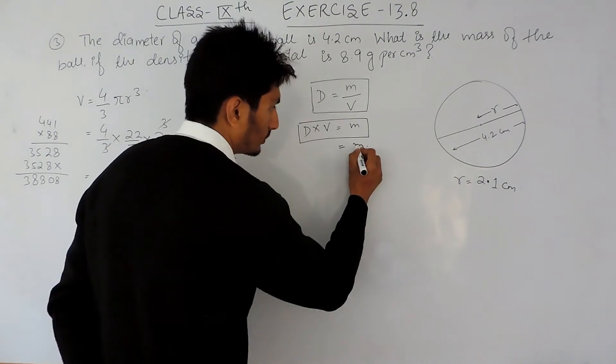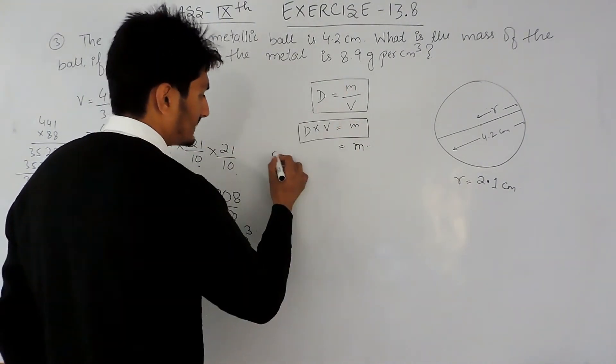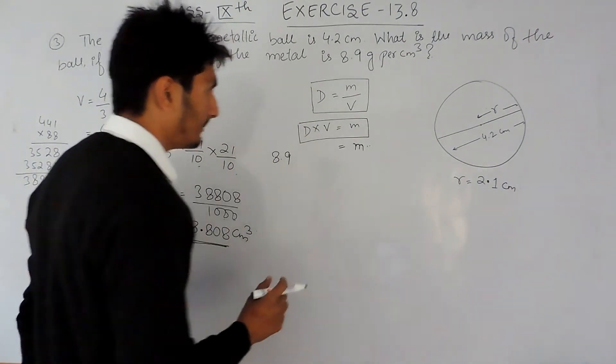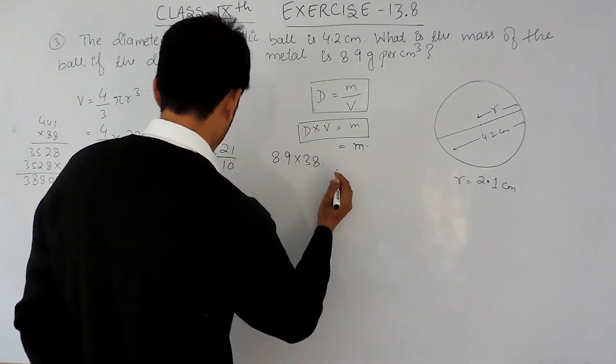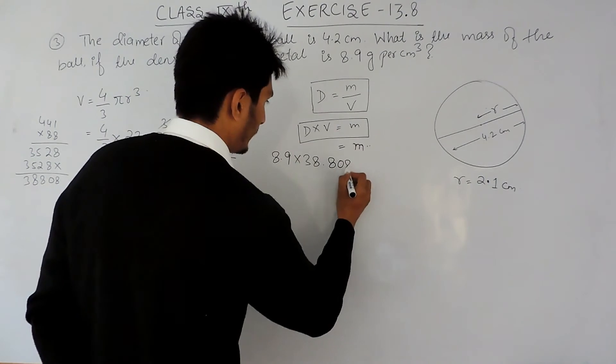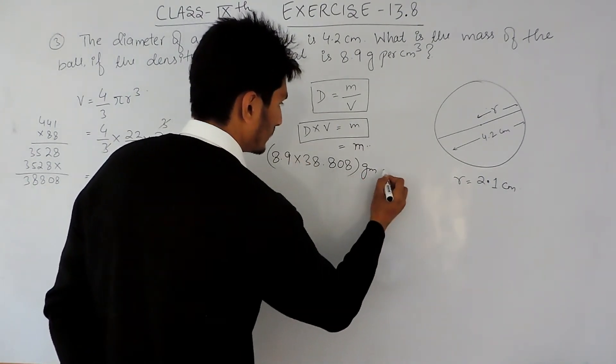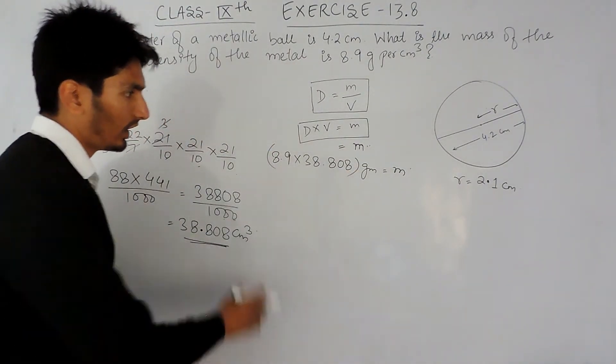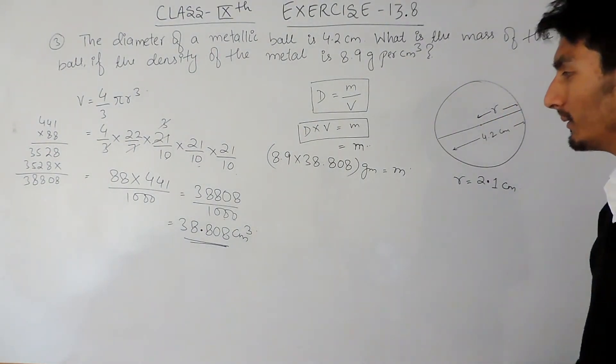Now I have to find the mass, so mass will be my density - and density is 8.9 gram per centimeter cube - and my volume is 38.808. So this much grams will be my mass. Now you have to multiply these two numbers and you will get your mass.